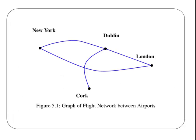Here's a very simple example. We have New York, Dublin, London, and Cork. This is a graph of flight networks between a group of airports. There's two characteristics we'll mention here first.